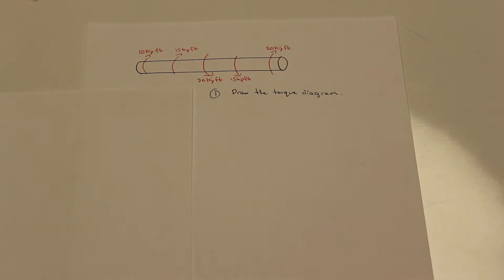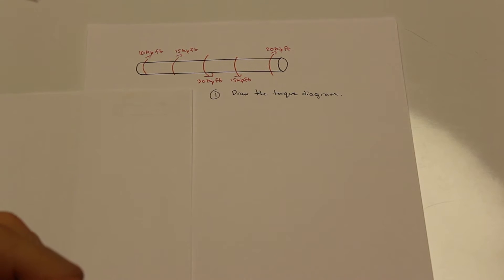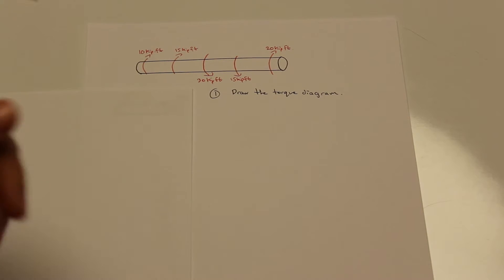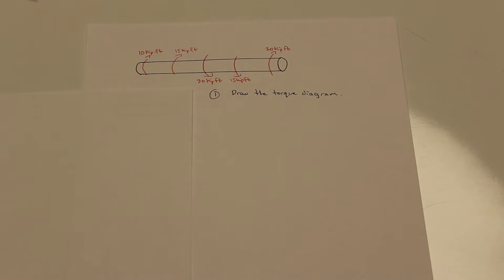Hi guys, Fred here. Today we're going to solve a very simple torque diagram. Now this is the first type of torque diagram that we're going to look at in this torsional twisting section, and this one's fairly simple.